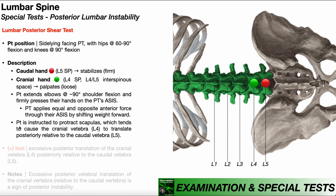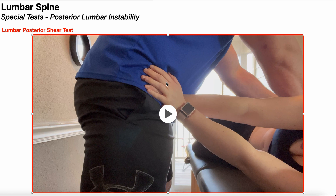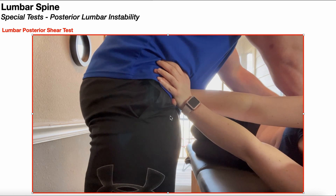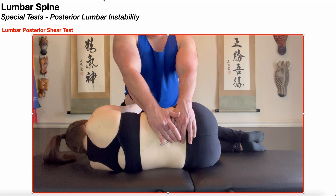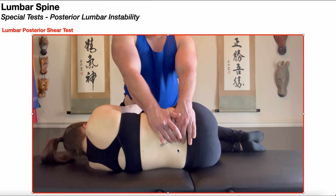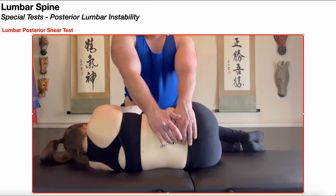Once we have that force balance, the patient is then instructed to more forcefully protract her scapulas, which tends to cause the cranial vertebra L4 to translate posteriorly relative to the caudal vertebra L5. Now I'm going to have her ramp up the force into scapular protraction. When she does that, she's actually going to move a little bit away from me — and that's good, because if there is posterior instability at this segment, L4 will move posteriorly relative to L5. I need to maintain my position and not allow myself to fall back even when she pushes harder. While she's activating into scapular protraction, I maintain my position and detect any excessive posterior translation of L4 relative to L5.